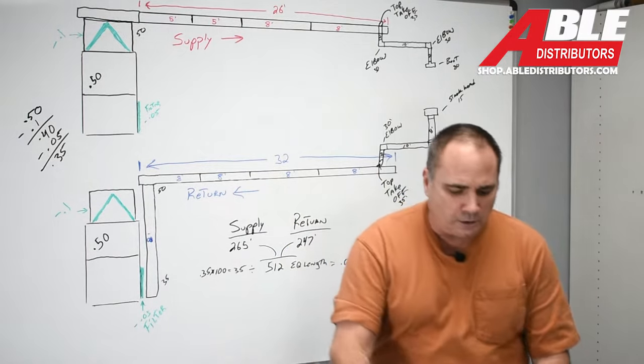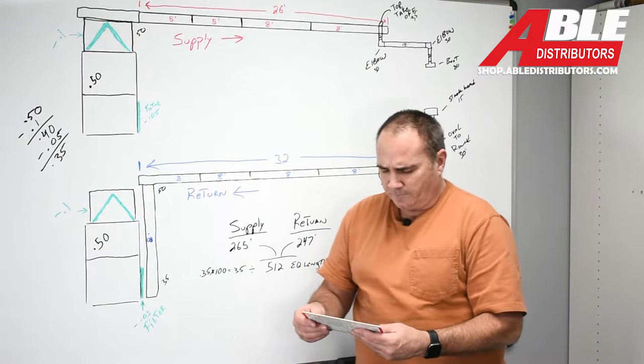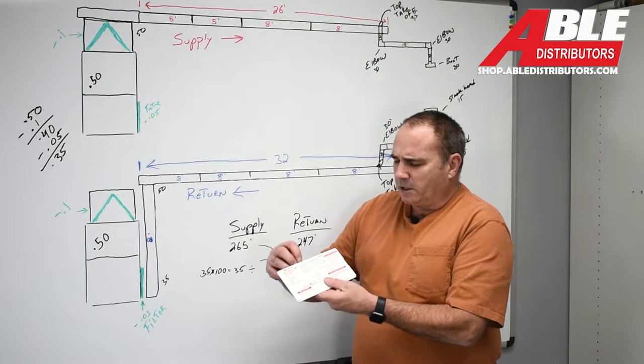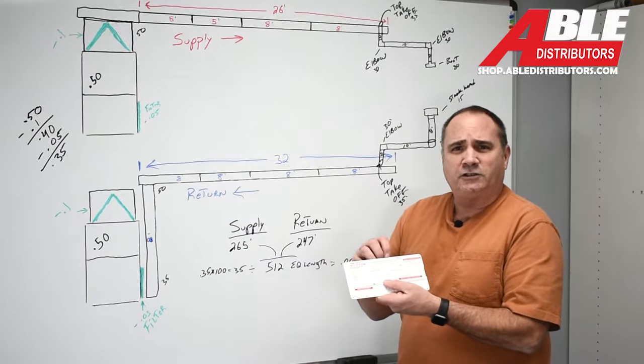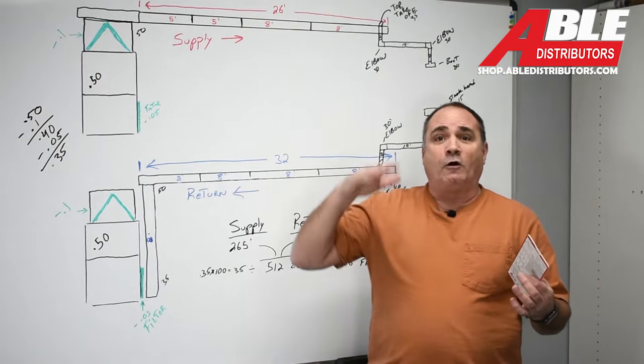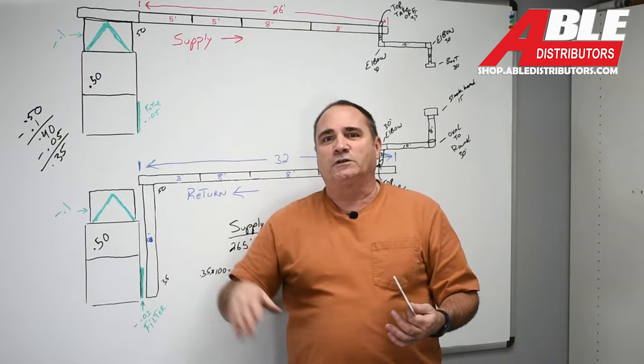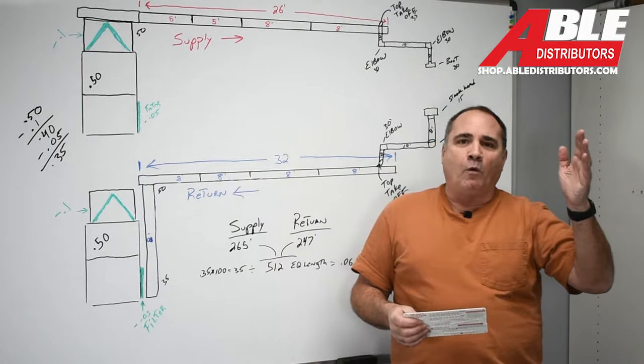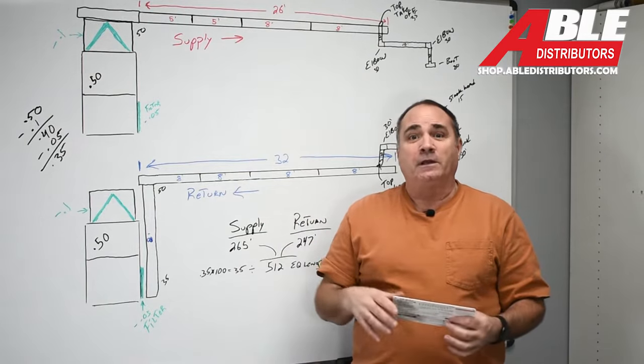So when we're using a ductulator, the first thing you've got to determine is the friction rate. Now a lot of guys just do rule of thumb. I talk to a lot of guys and they say, oh, I go 0.05 if the duct works really bad. I go 0.1 if the duct works really good. That's how I do it.